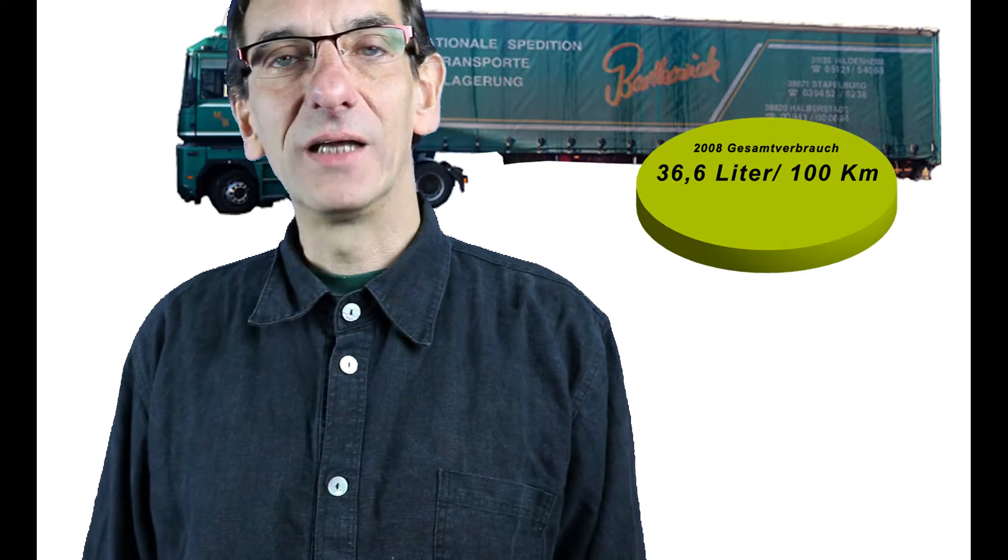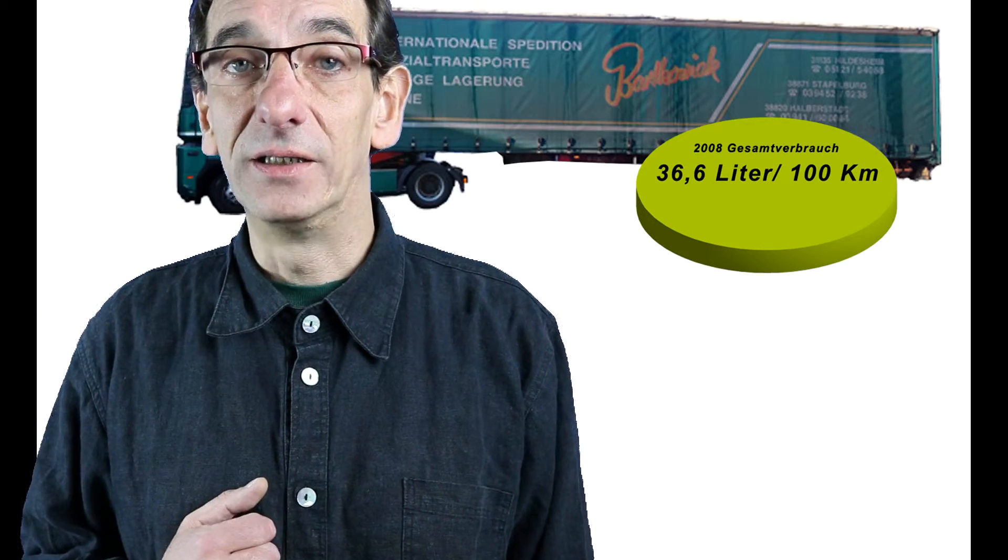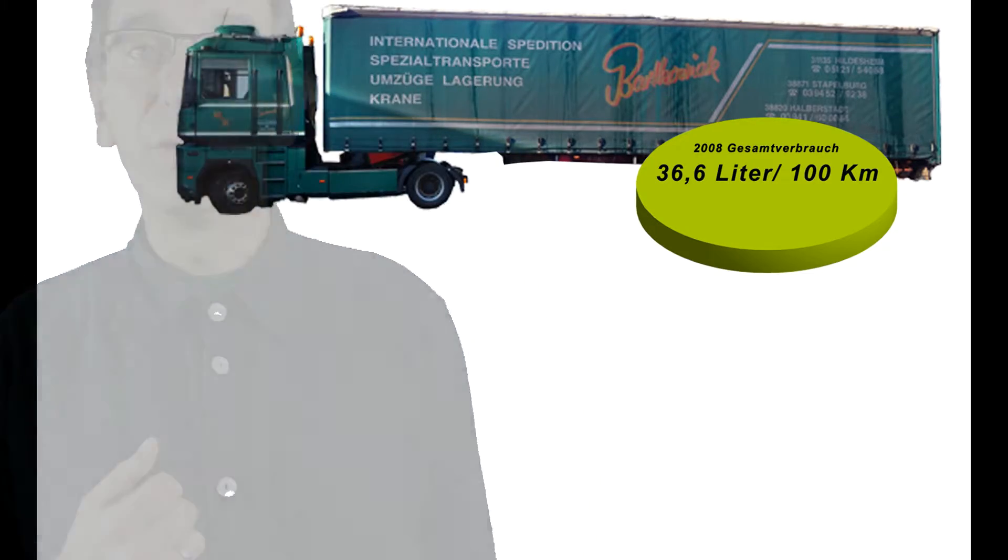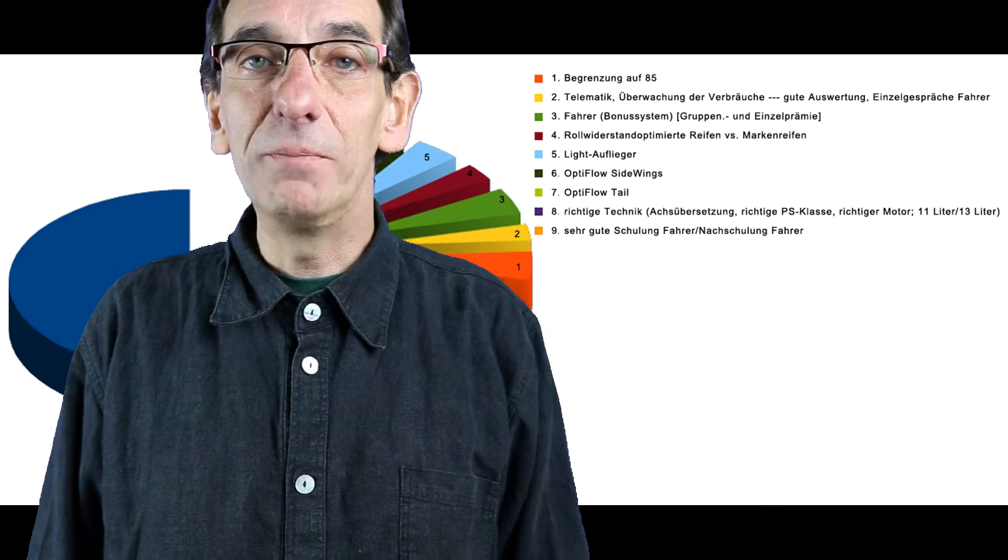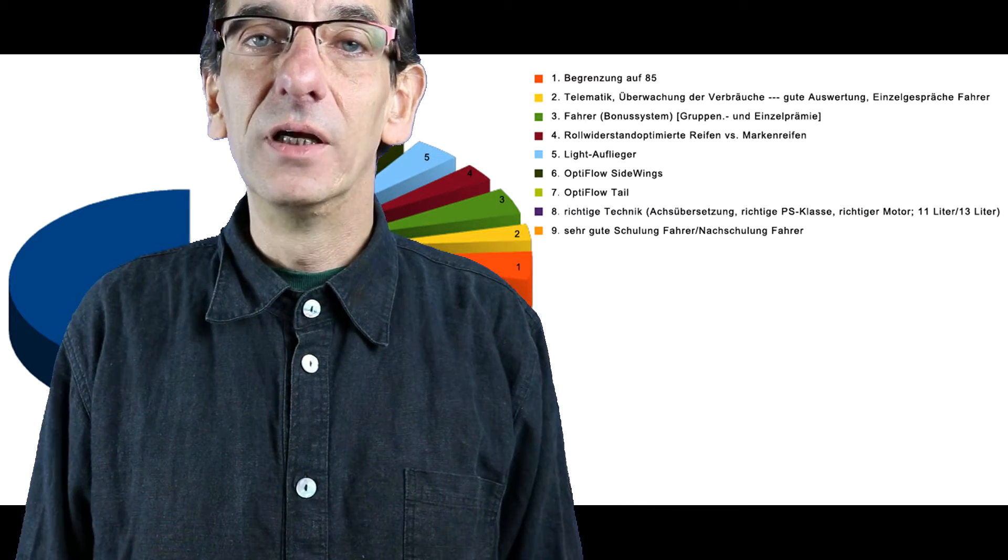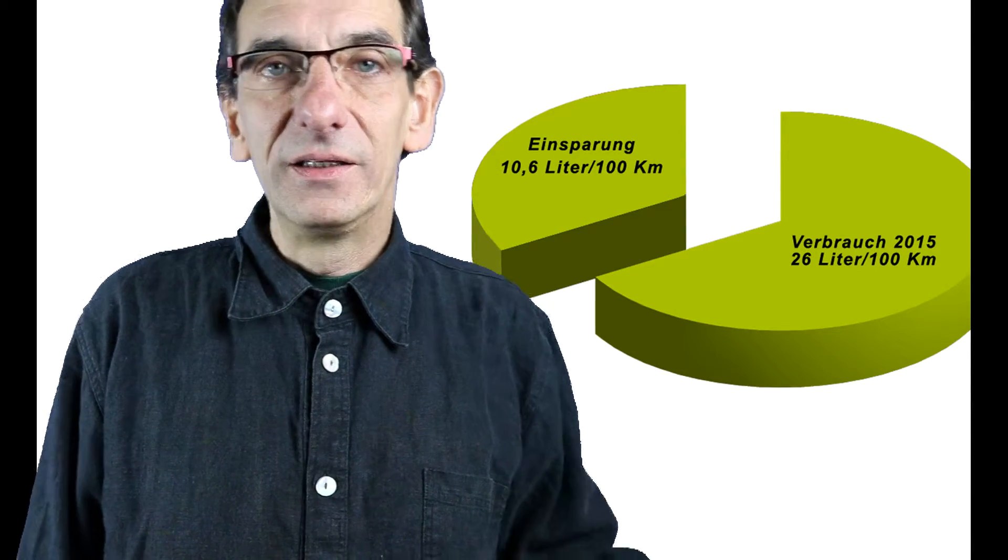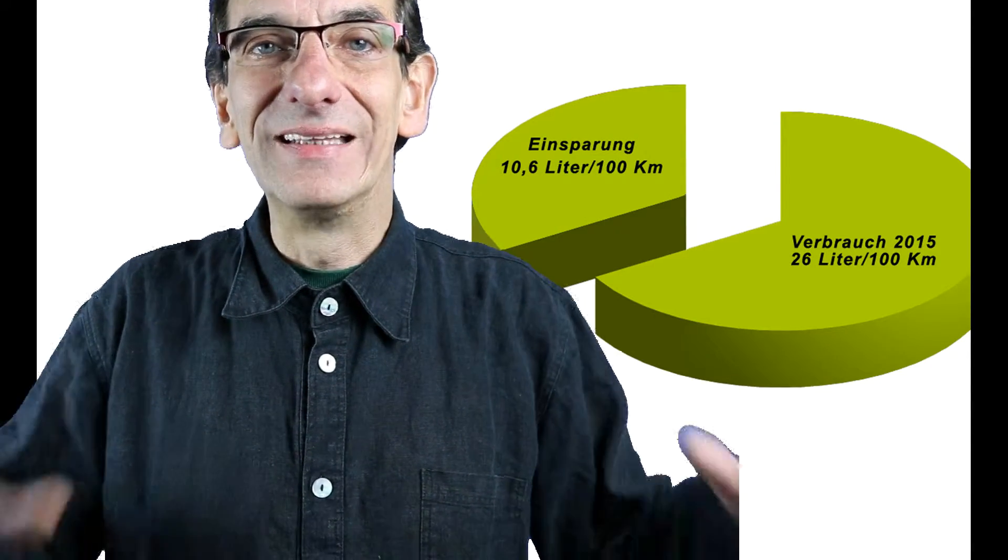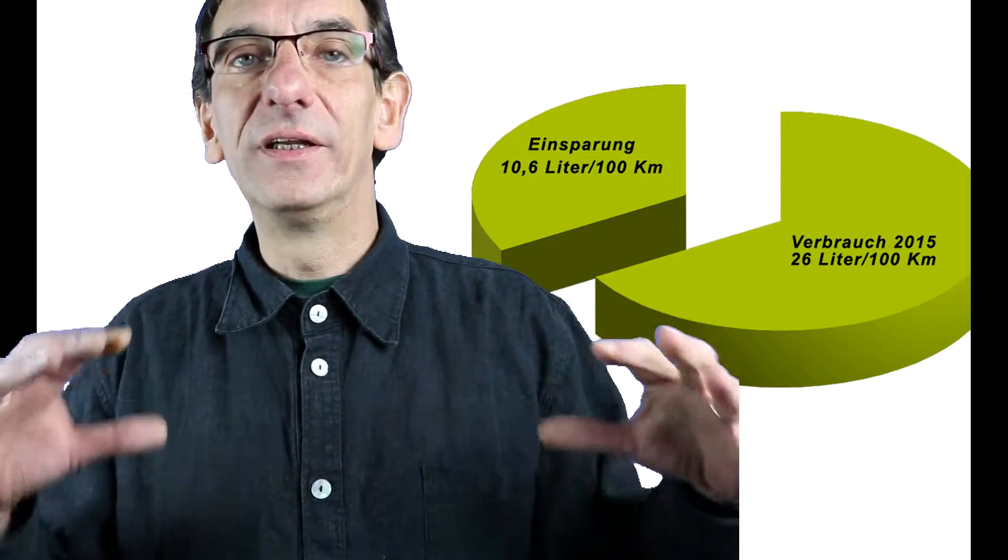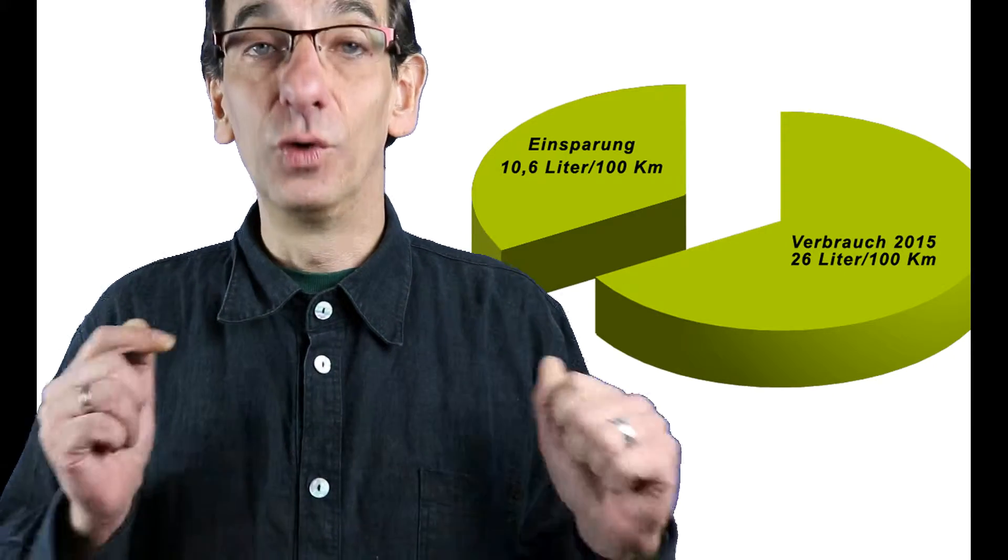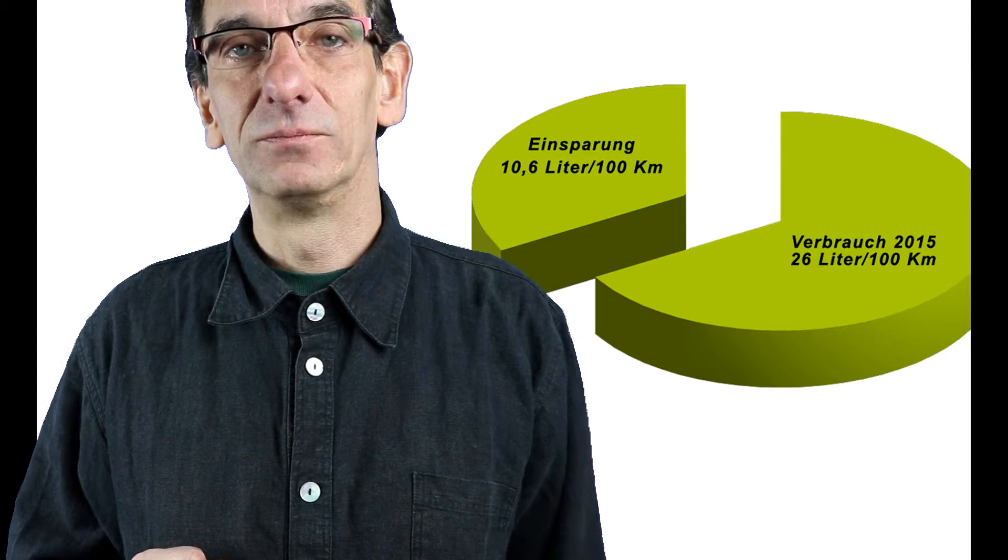In 2008, we had an average fleet consumption of something between 36 and 37 liters per 100 kilometers. In 2015, we accomplished by implementing those 9 actions to reduce the usual fuel consumption of particular trucks to 26 liters per 100 kilometers. In consequence, the entire fuel consumption decreased successively. Finally, we can state that our idea to achieve only 20 liters per 100 kilometers in 2020 is within reach.